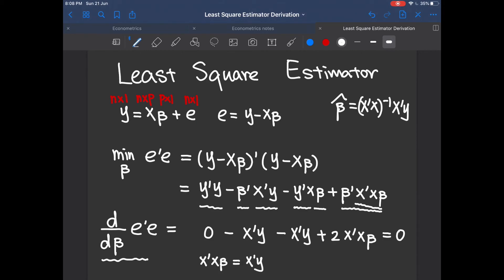So you can multiply the inverse of x transpose x on both sides of this expression. And then you get beta is equal to x transpose x inverse x transpose y. And don't forget to add a hat here because this expression actually represents the least square estimator of beta, not beta itself.